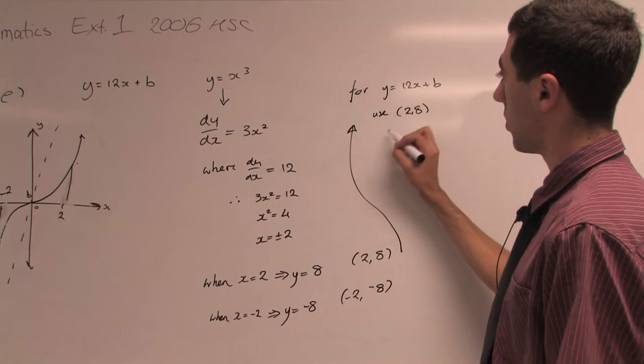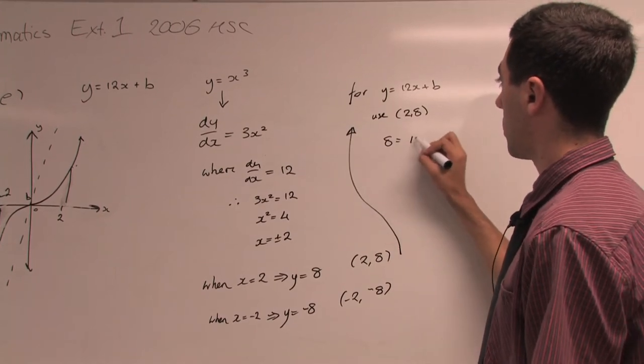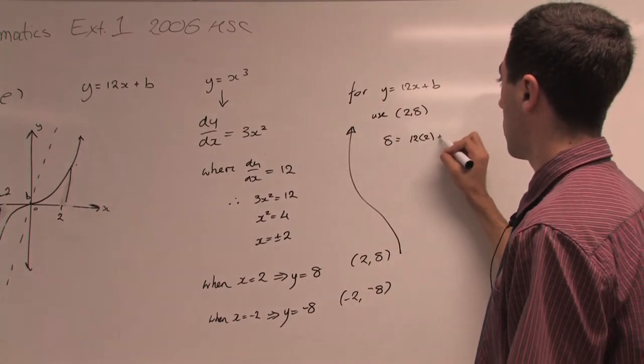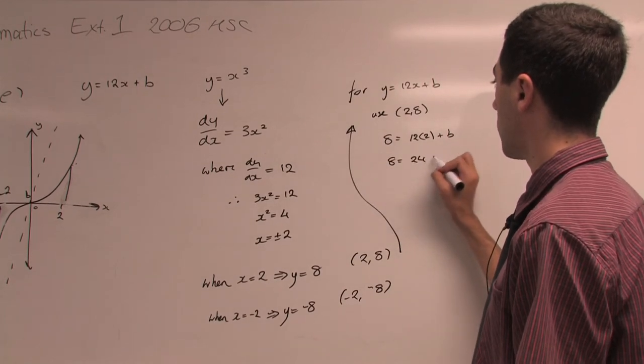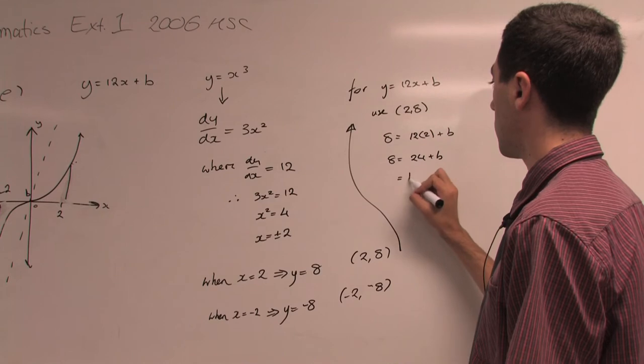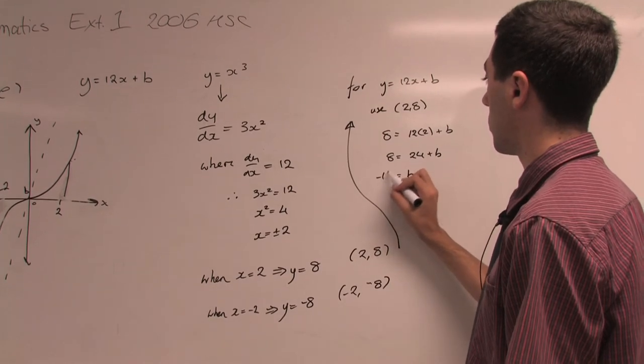We substitute 8 for y and 2 for x. So that would be 8 = 24 + b, which means b = -16.